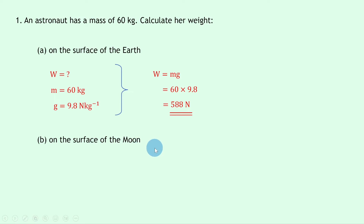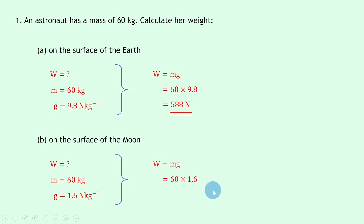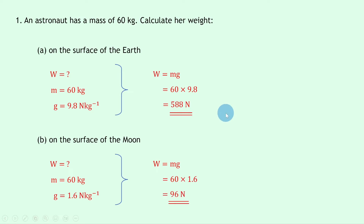To calculate her weight on the surface of the moon, we do the same again but use a different value of g. We're trying to find weight again, and the mass is 60 kilograms — because mass stays the same no matter what planet you're on — but the gravitational field strength g differs. On the moon, g has a value of 1.6 newtons per kilogram, which you can find on the data sheet. W = mg gives us 60 times 1.6, which equals 96 newtons. You can see the clear difference: the weight on the moon is much less than on earth.